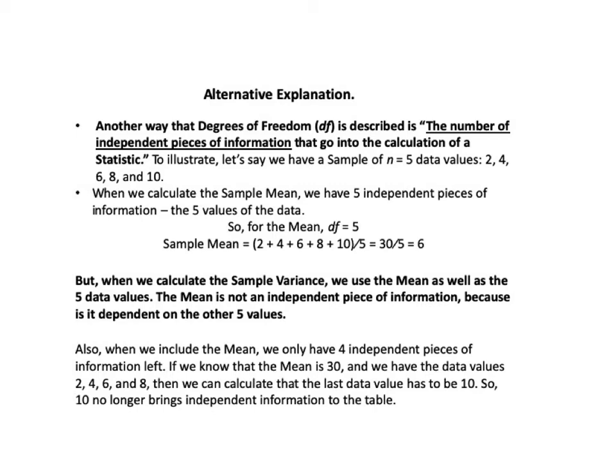But when we calculate the sample variance, we use the mean as well as the five data values. The mean is not an independent piece of information because it is dependent on the other five values, which we're using again. Also, when we include the mean, we only have four independent pieces of information left. If we know that the mean is 30 and we have data values 2, 4, 6, and 8, then we can calculate that the last data value has to be 10. So 10 no longer brings independent information to the table.